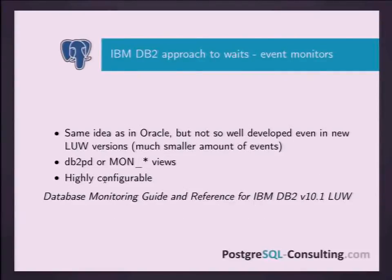In DB2 the situation is pretty much the same. I personally think they tried to bridge the gap between Oracle and themselves, because they started to introduce wait-based ideology of performance tracking in version 9.5 for Linux, Unix, and Windows. It was not a lot of useful events at first, but in DB2 version 10.9.1, there are a lot of monitoring views and many events. They are highly configurable and quite useful for performance diagnosis.